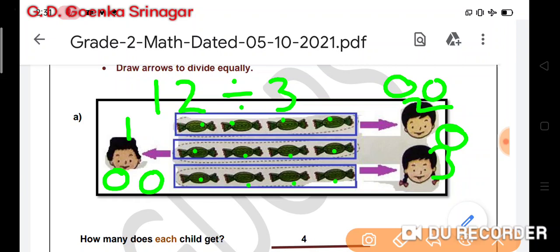Then again 1, 1, and 1. Till now I have distributed 6 toffees. I am still left with 6. So again 1, 1, and 1. Now I am left with 3 more, so 1, 1, and 1.